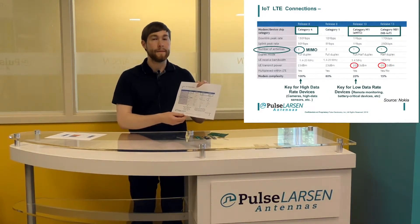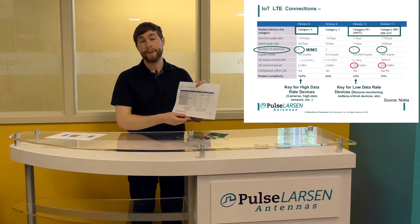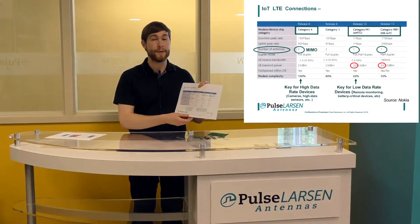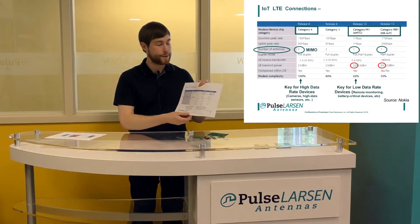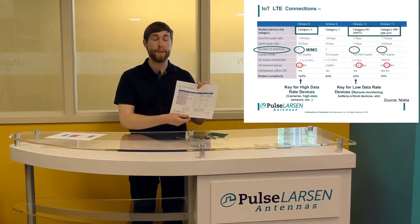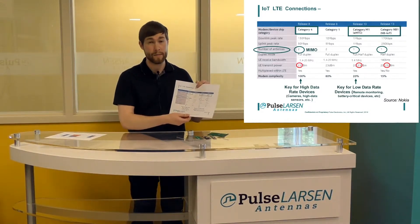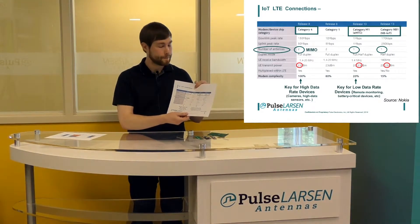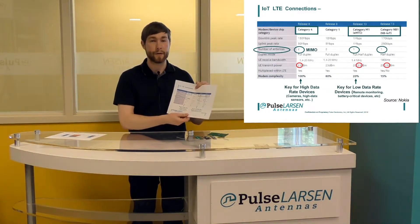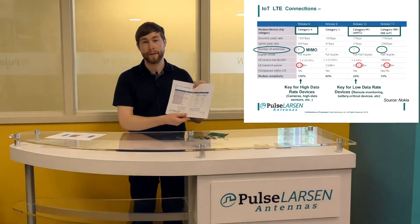Lastly, it can be very valuable to know that with M1 and NB-IoT you can actually choose to use a radio module that outputs at 20 dBm instead of 23 dBm. That's half the power and allows for less battery usage, less power consumption, and perhaps a longer device life.